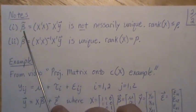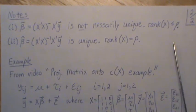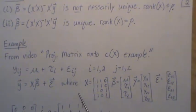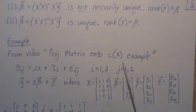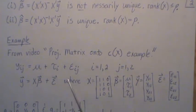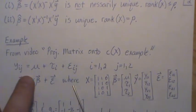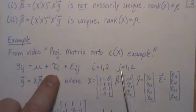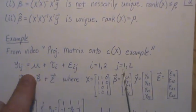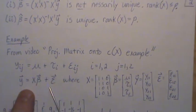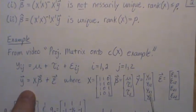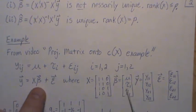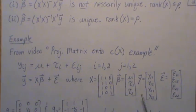Now, let's do a quick example illustrating why this is not necessarily unique. In a previous video called projection matrix on the column space of x example, we used this example. So it was an effects model where we had two groups and two observations within each group. And then in vector form, it could be written like this, where y, the design matrix beta, and the error term.